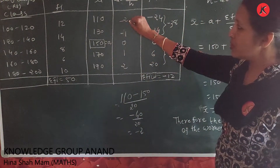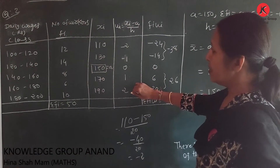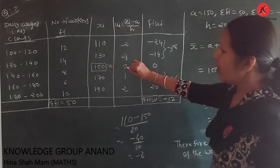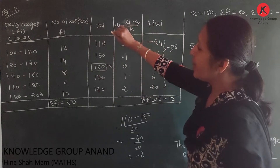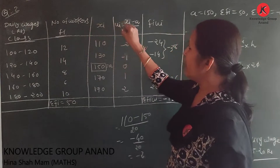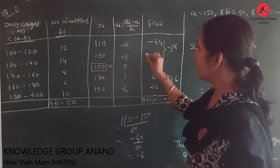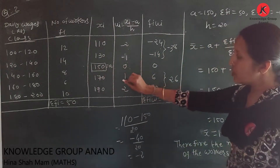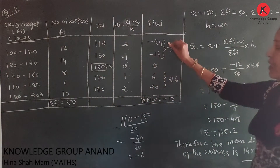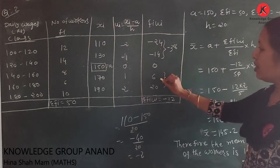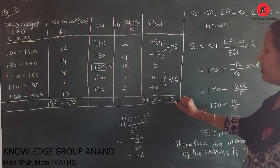The ui values are: -2, -1, 0, 1, and 3 for each class. We find fi × ui: 12 × (-2) = -24, 14 × (-1) = -14, 8 × 0 = 0, 6 × 1 = 6, 10 × 2 = 20. After summing: Σfi·ui = -12.